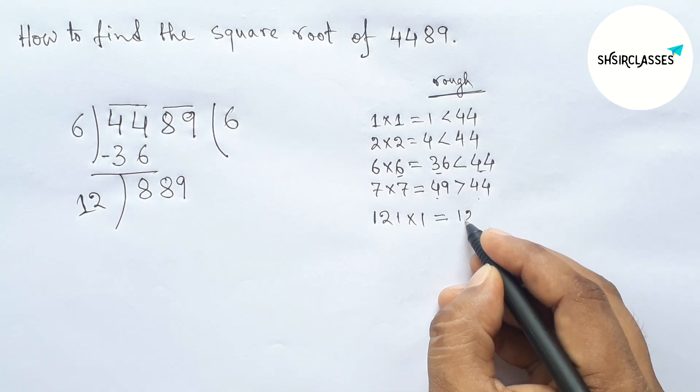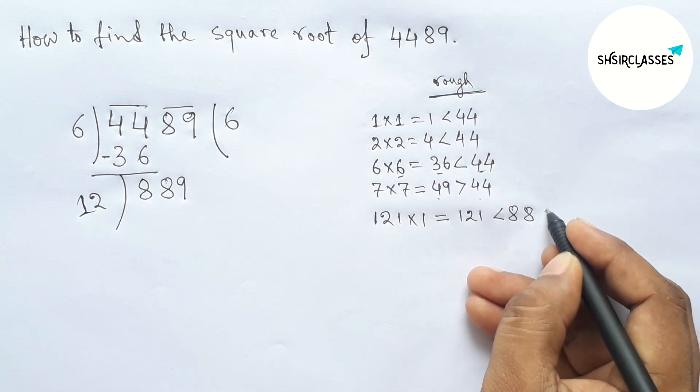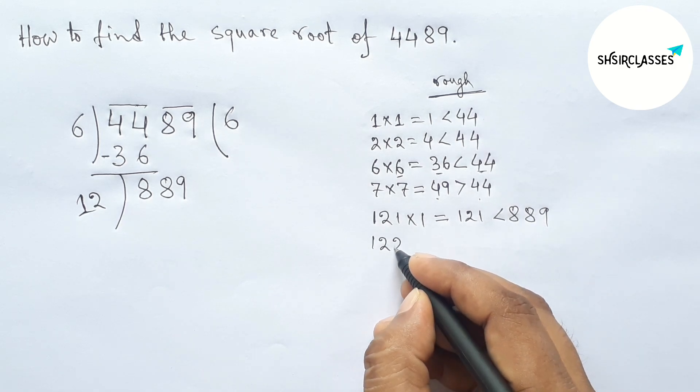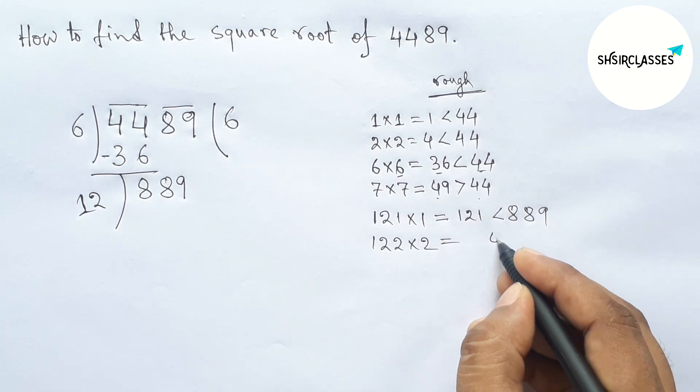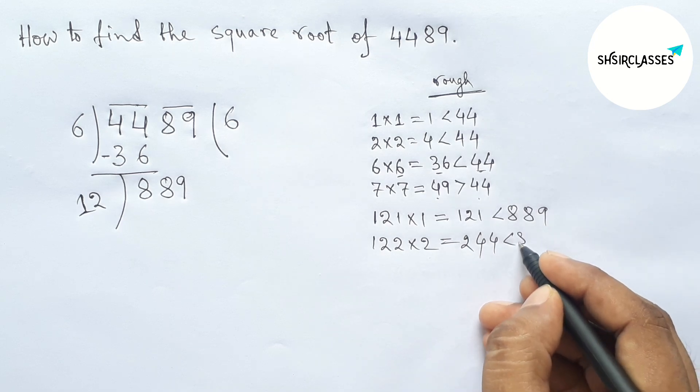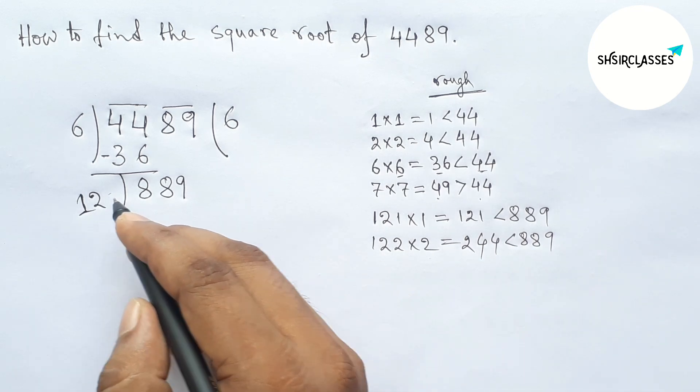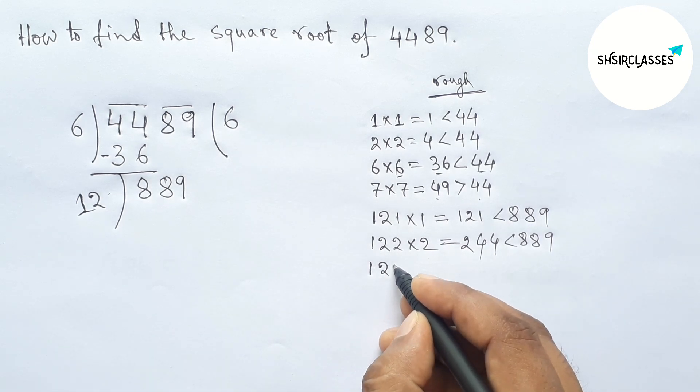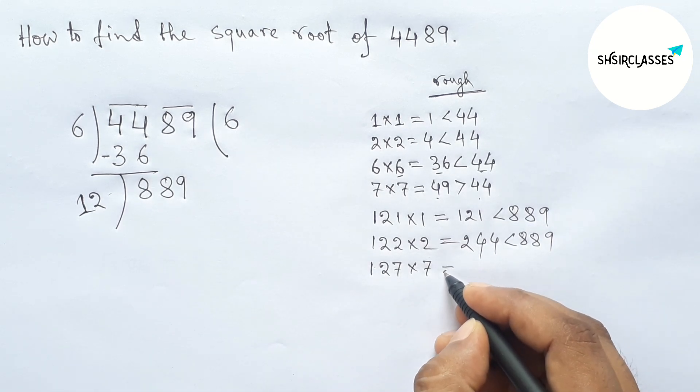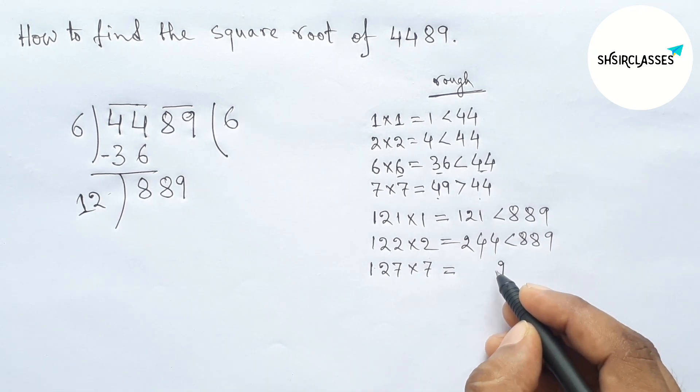Now taking 2 and multiplying by 2, so which is less than 889 but not more closer to 889. So now directly taking here 7 and multiplying by 7. So 49, so 18, so 889.